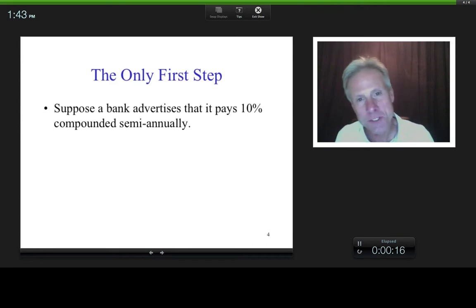We've got a bank that advertises that it pays 10% compounded semi-annually. And, by the way, is that an effective rate? It's not, right? Why isn't it? Because it doesn't say it's an effective rate. And unless it says it, you have to assume what? That it's the stated, or nominal, or advertised rate.